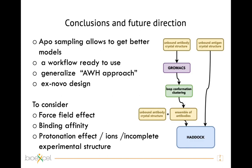The main conclusion is that it is important to focus on the sampling of the APO form of the antibody. The antigen appears to be the more rigid molecule. The key to improving the model is achieving better sampling of the hypervariable loops.